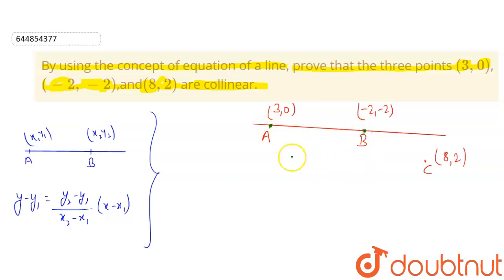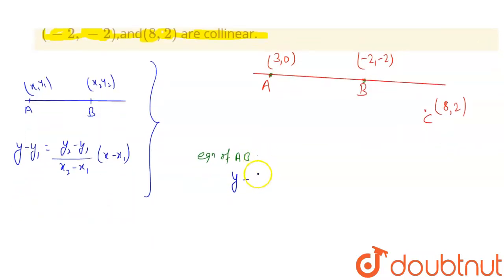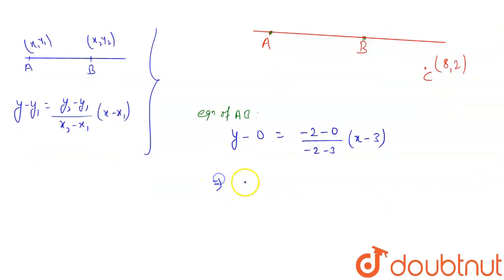Now, equation of this AB will be, using this formula, you can say: y - y₁, y₁ means, let's say this is (x₁, y₁), this is (x₂, y₂). Then y - y₁ = (-2 - 0)/(-2 - 3) × (x - 3). So this will be what,